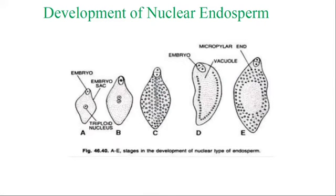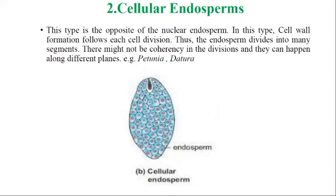In the figure we can clearly see how the formation of nuclear endosperm takes place: each nucleus is pushed towards the periphery and a large vacuole forms at the center. These five stages show the development of the nuclear type of endosperm.